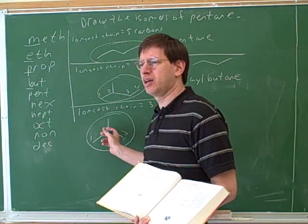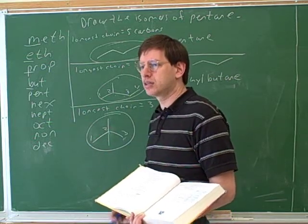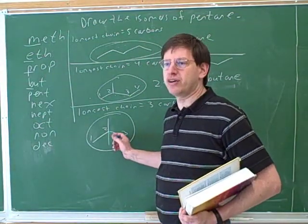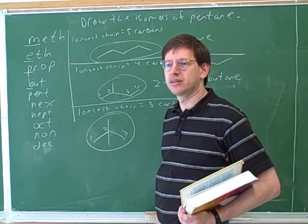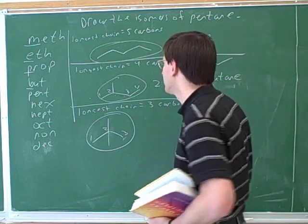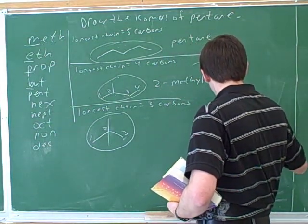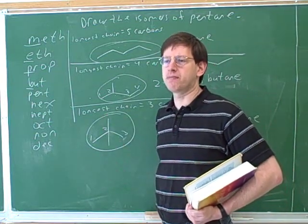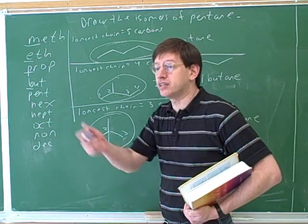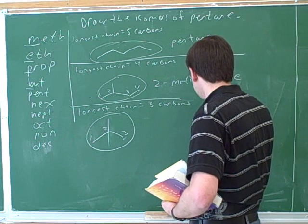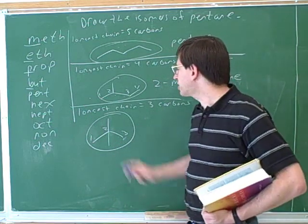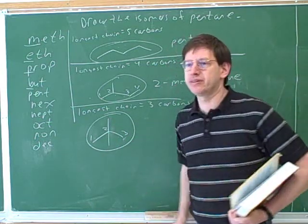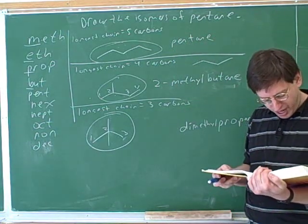Do you know what this name would be? 2,2-dimethylpropane. Let's go through that. The parent chain has three carbons, so it's propane — men eat pickled: propane. Now, how many carbons are in this substituent? One — so it's methyl, because it's a substituent. But there are actually two of those methyl groups. When there are two substituents, we need a numerical prefix: this is called dimethyl.